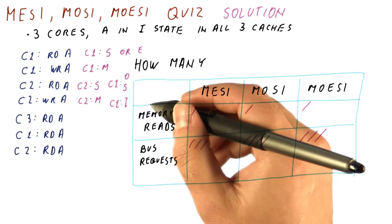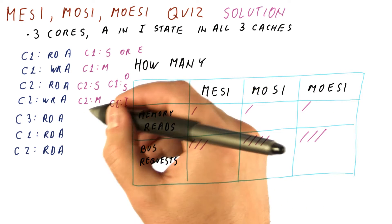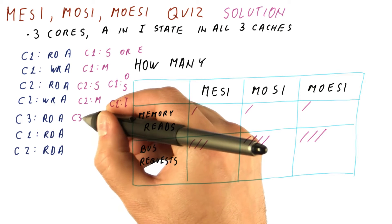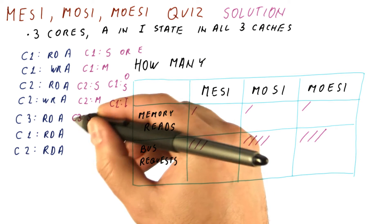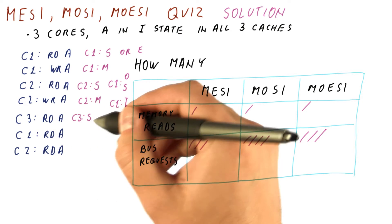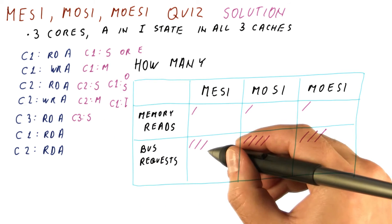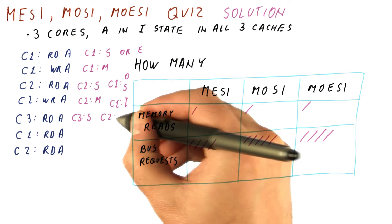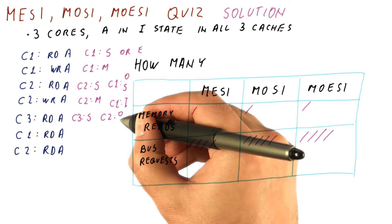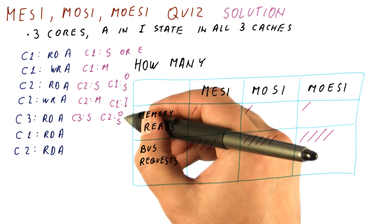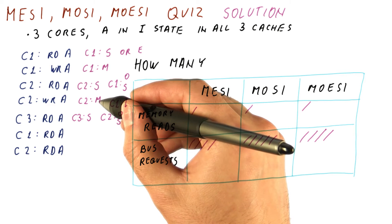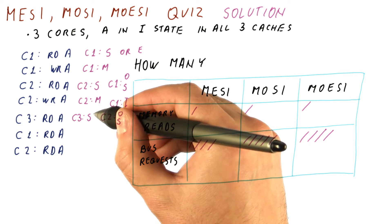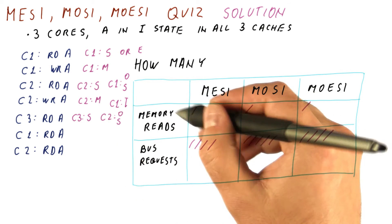Now let's see what happens when C3 reads. When C3 reads, C3 will get the block in the shared state, and this is a read miss. It needs the data. So there is definitely a bus access in all of them. C2, however, moves to either the owned or the shared state, depending on whether we have the owned state. In this case, again, C2 supplied the data to C3, so there was no memory read.